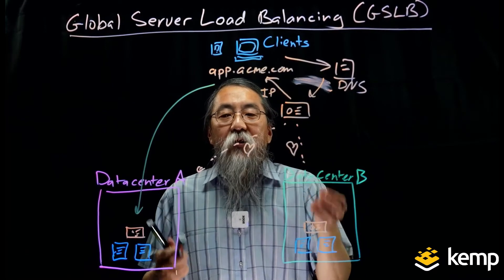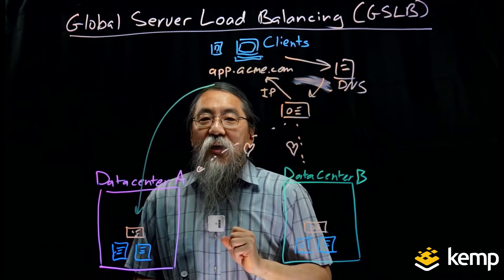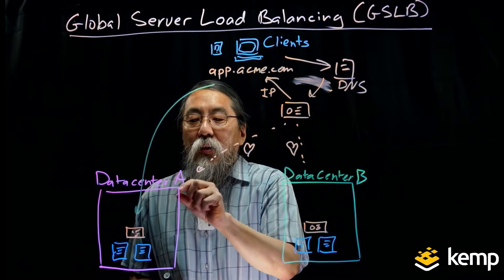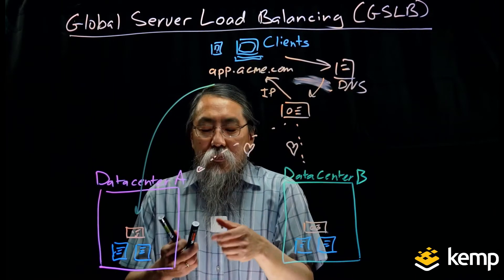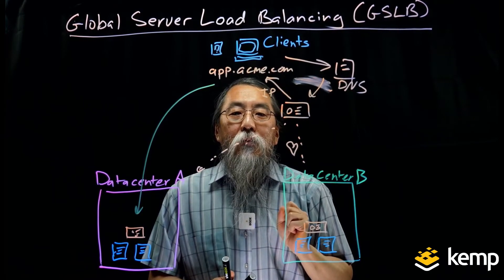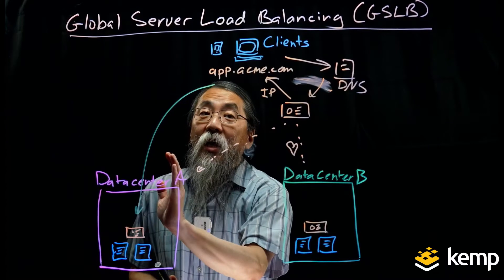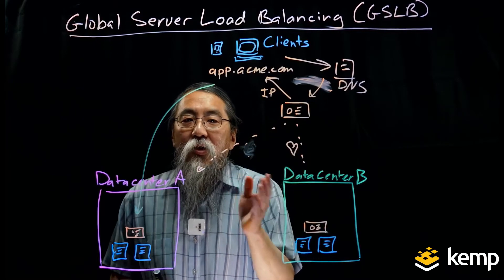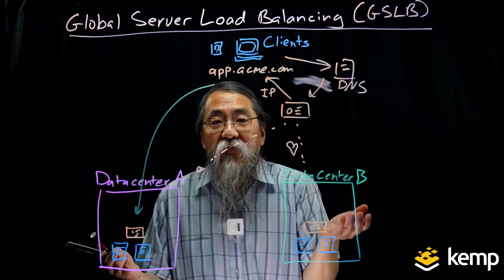The GSLB device can be configured in multiple ways. For disaster recovery, you can configure it so that all traffic always goes to data center A — giving out IP address A — unless data center A's health check fails, at which point all traffic is sent to data center B. When data center A comes back up, you can either automatically send traffic back or wait to manually flip a switch, since you may need to do a lot of work before the failed data center is truly ready again.